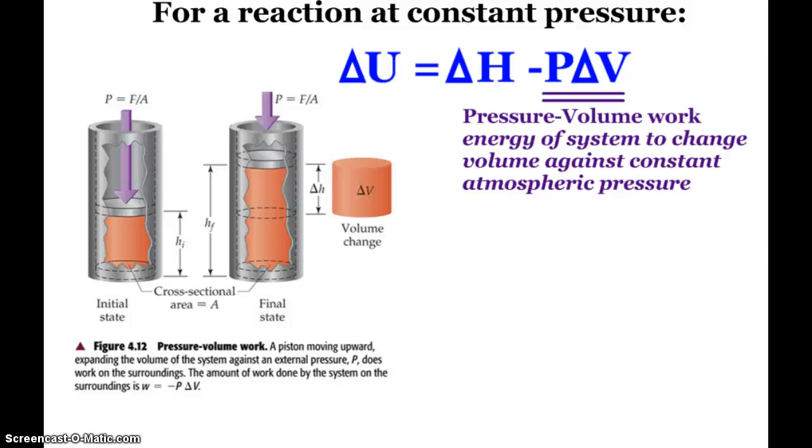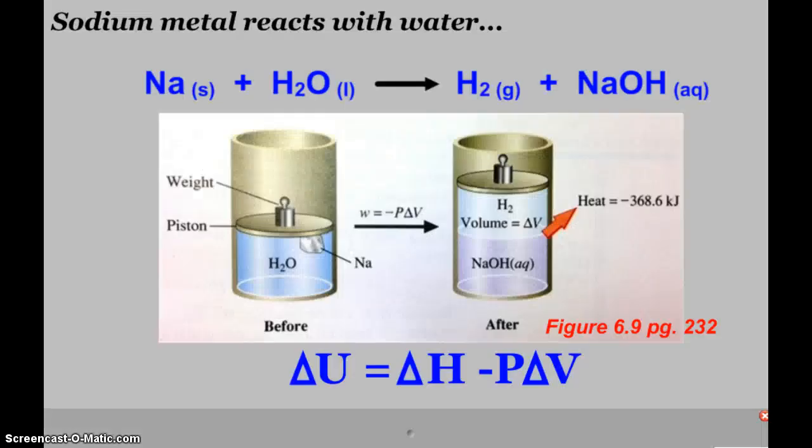If we have a reaction in a vessel at an initial state, and then in the final state it produced gas that caused a change in volume, ΔV, then we would see this pressure-volume work. A classic example: if we take a piece of sodium metal and place it into water, we produce hydrogen gas and aqueous sodium hydroxide. If this were in a vessel with a piston, as the reaction proceeds and we produce hydrogen gas, we would see a change in volume.